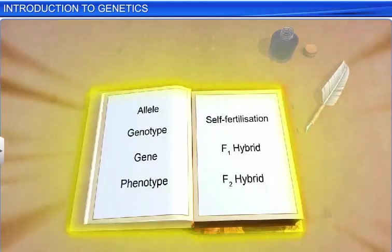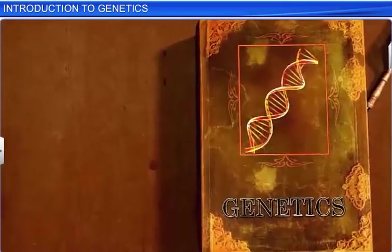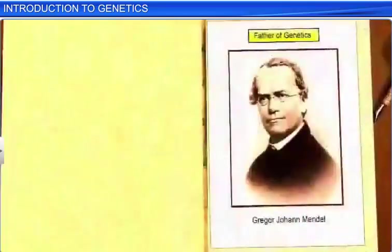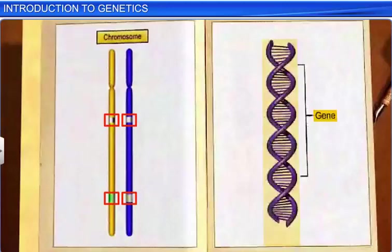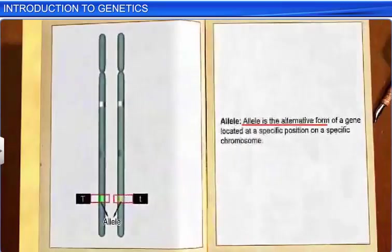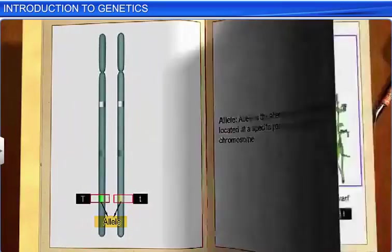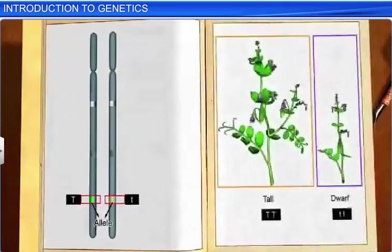Now, let's take a look at the different terms that we come across while studying genetics. A gene or a factor is the functional unit of hereditary material that is DNA. In other words, it is a unit of DNA that is responsible for the appearance and inheritance of a character. The alternative form of a gene located at a specific position on a specific chromosome is known as the allele. It governs the trait of an individual and is generally represented by a letter.